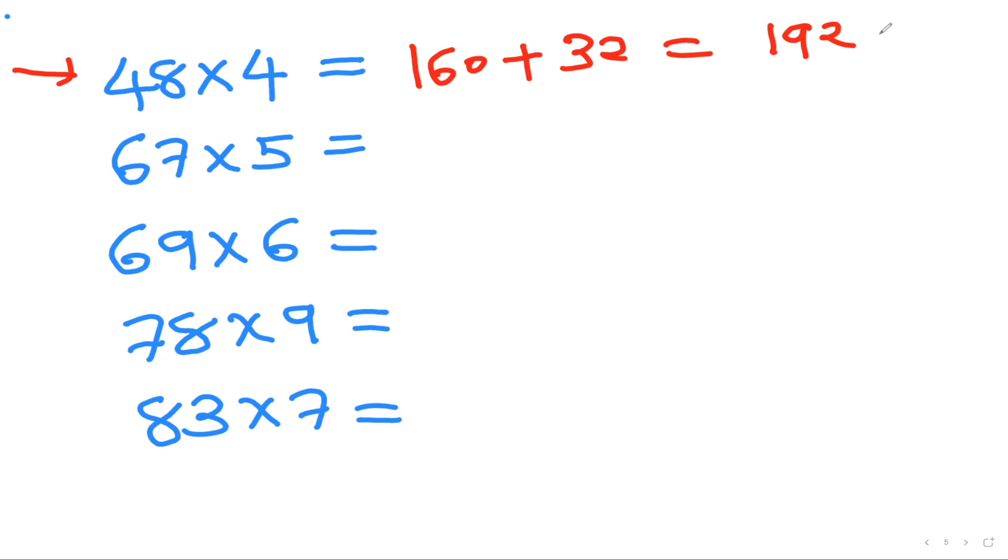67 times 5, so 60 times 5 is 300 plus 7 times 5 is 35, which will give me 335.